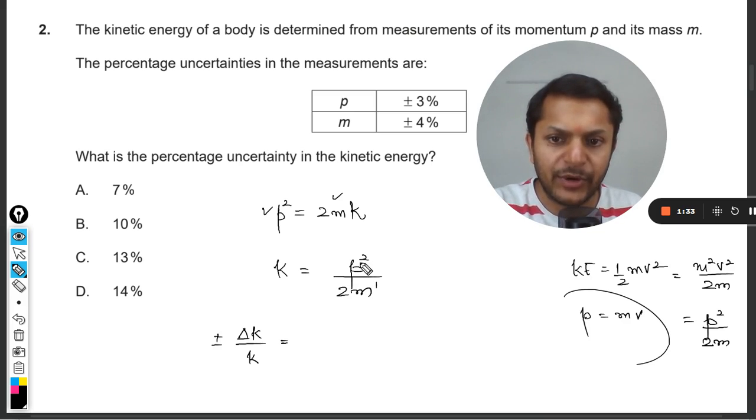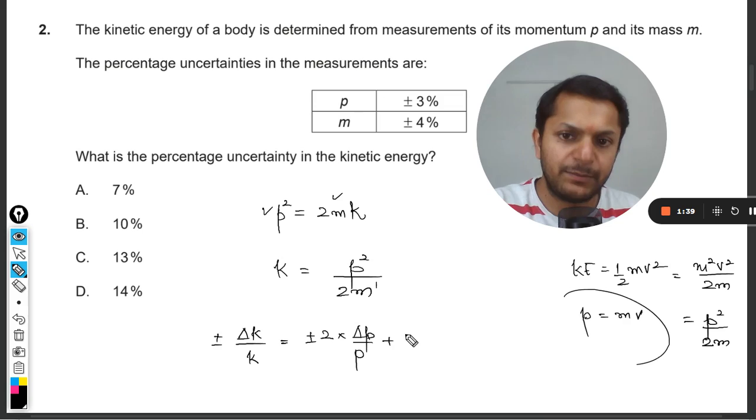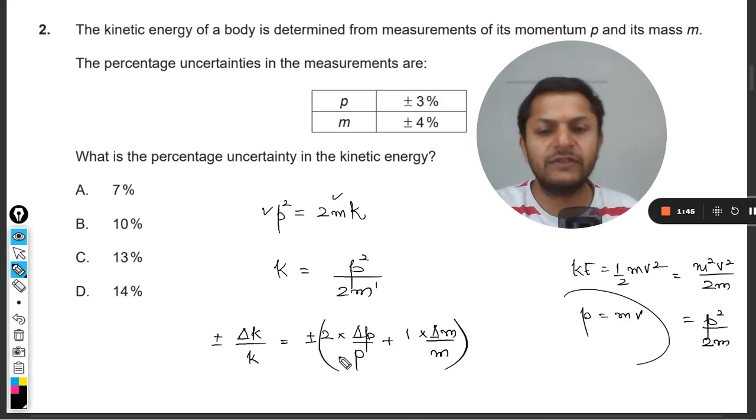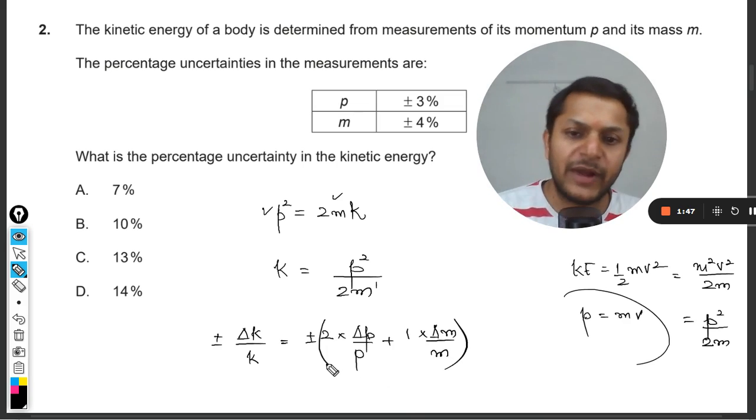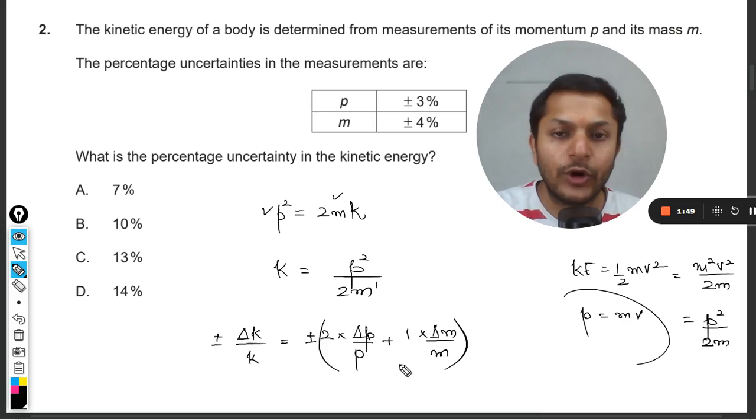Momentum is a variable, mass is a variable, and the power is 2 here and the power is 1 there. So clearly plus minus, 2 will be multiplied by delta p by p, plus 1 will be multiplied by delta m by m. Whatever is the value there will be plus minus in front of the bracket. So this is what we are now going to do.